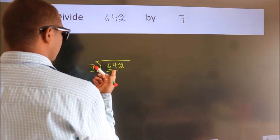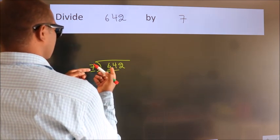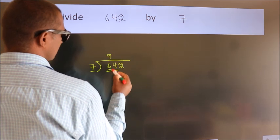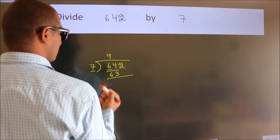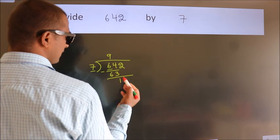A number close to 64 in the 7 times table is 7×9, which is 63. Now we should subtract. We get 1.